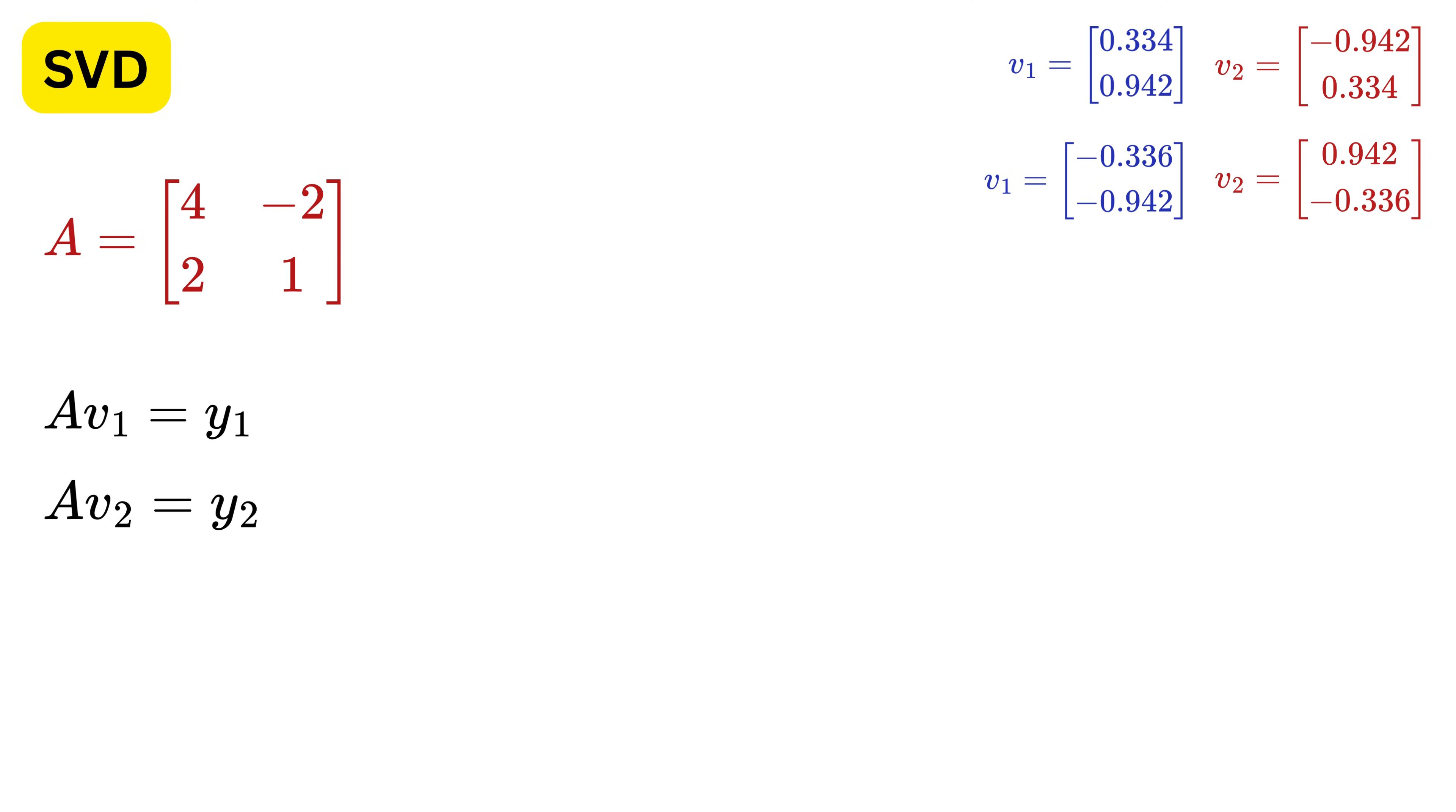Now let us do some algebra and see some magic. We have these two equations with us, right? V1 and V2 are already unit vectors, but Y1 and Y2 are not, so we can represent it using some scalar value sigma, which acts as the magnitude and the unit vector U, which represents the direction.